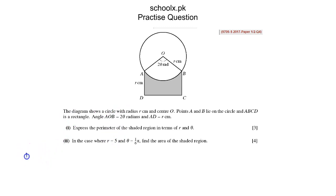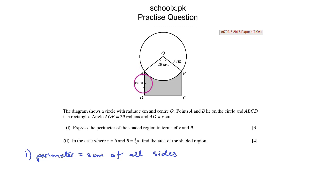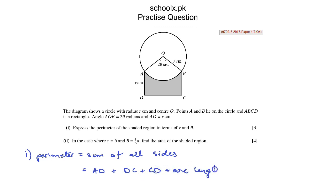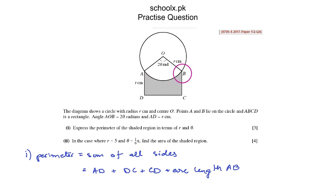Perimeter is basically the sum of all sides. The shaded region consists of AD, DC, CB, and the arc length AB. So we can write this as AD plus DC plus CB plus arc length AB. AD is R, BC is also R because it is a rectangle. We can find the arc length AB using the formula Rθ, but here the angle is 2θ, so the arc length is R·2θ.